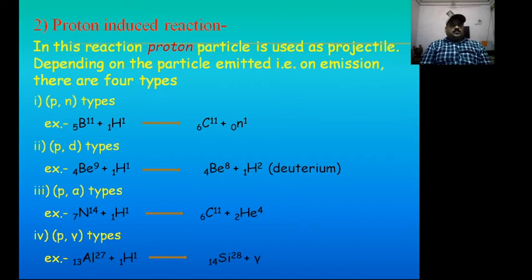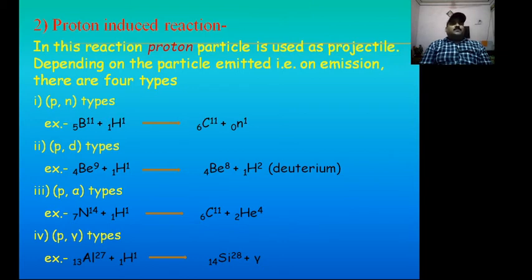First subtype: proton-neutron type, where neutron acts as ejectile. Second subtype: proton-deuteron type, where deuteron acts as ejectile. Third type: proton-alpha particle, where alpha particle acts as ejectile.